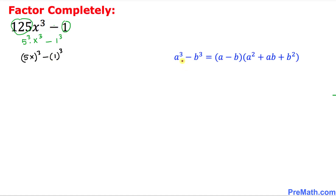So we are going to use the difference of two cubes formula: a³ - b³ = (a - b)(a² + ab + b²). Here, 5x is our a and 1 is our b. Let's go ahead and apply that formula.